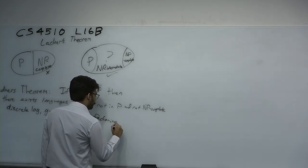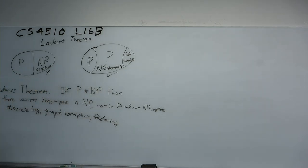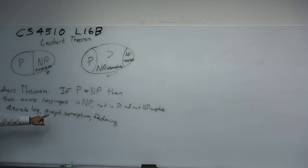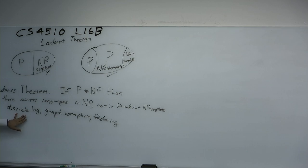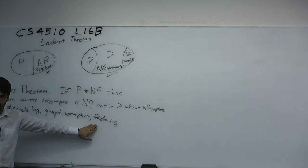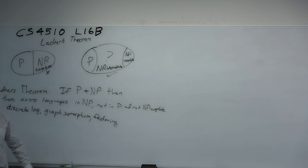Integer factorization is the one I want to talk about. We proved subgraph isomorphism was NP-complete, but it turns out graph isomorphism is thought to be NP-intermediate. Discrete log you may have heard of — it's useful in cryptography. Factoring, of course, is useful in cryptography if you took 3510.